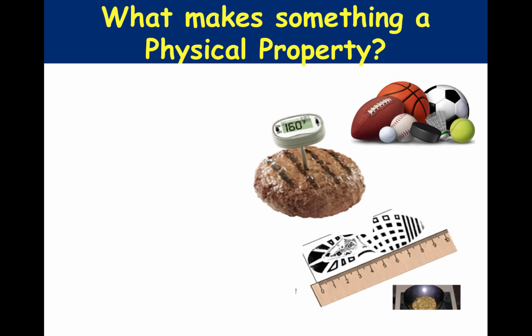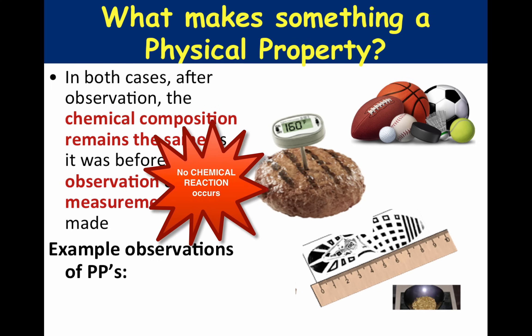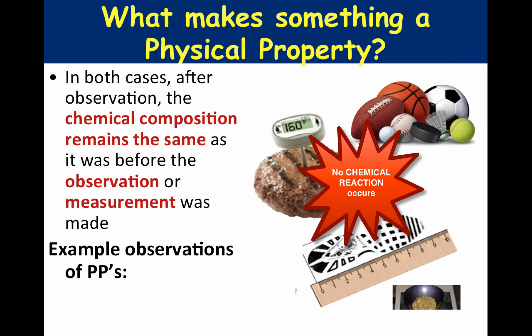What makes something truly a physical property has to do with the chemical composition of the object both before and after the observation is made. When a property is physical, the chemical composition of whatever you are observing remains the same after the observation is made — it is identical before and after. Some examples of physical properties are color, density, odor, texture, mass, and volume.